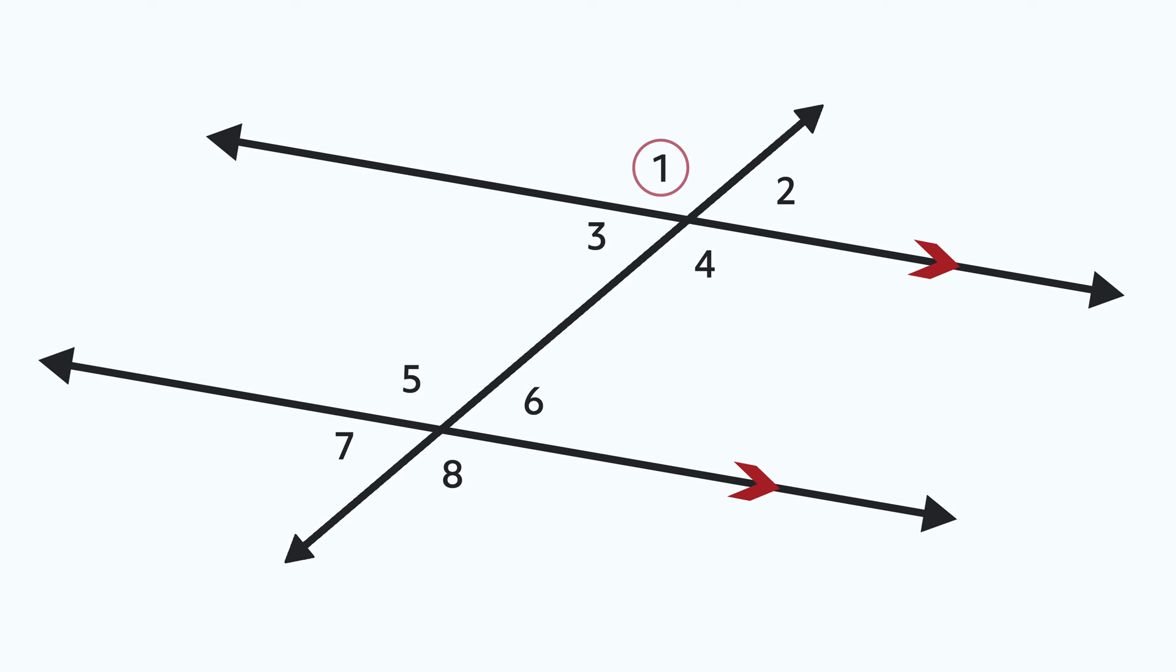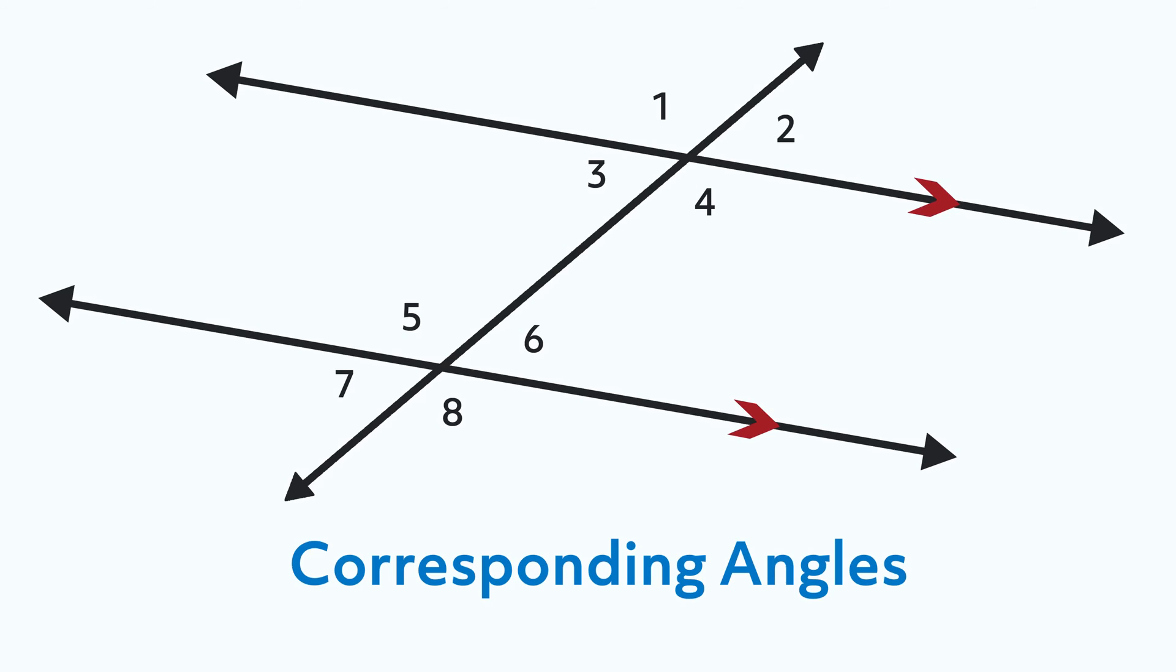Angle one is in the top left position in the top group of angles. If we look at the same spot in the bottom group of angles, we see that angle five is in the top left spot for that group. That means that angles one and five are corresponding angles.